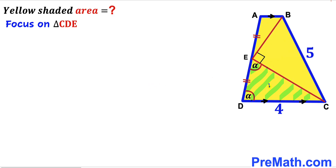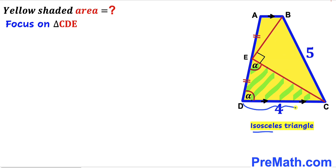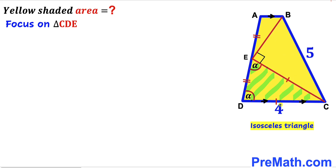Let's focus on triangle CDE. We can observe that triangle CDE is an isosceles triangle, since this angle is alpha and this angle is alpha as well. Therefore, side CD is going to be equal to side CE. Since these two side lengths are congruent and CD is 4 units, CE must be 4 units as well.